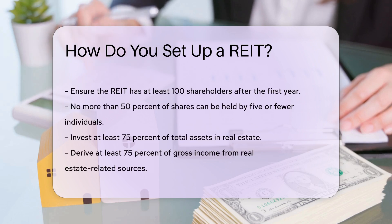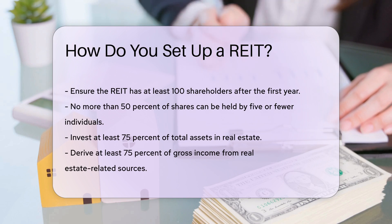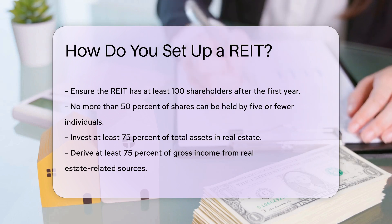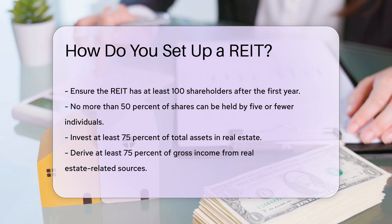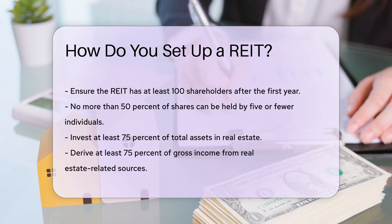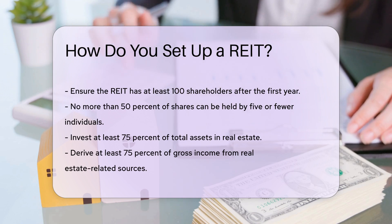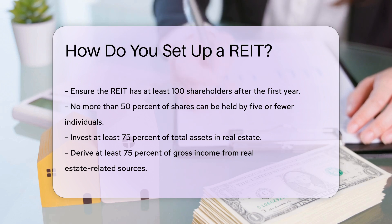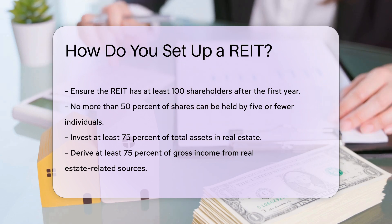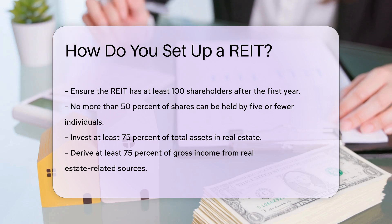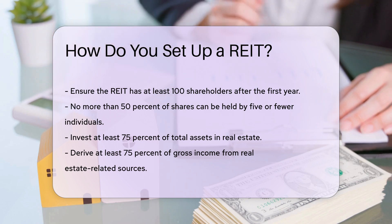The REIT must invest at least 75% of its total assets in real estate. It must also derive at least 75% of its gross income from real estate-related sources. Additionally, the REIT must distribute at least 90% of its taxable income to shareholders. This distribution must occur annually in the form of dividends.